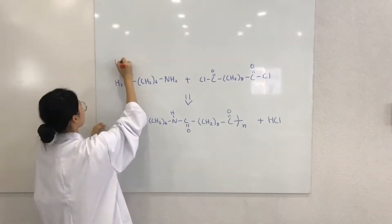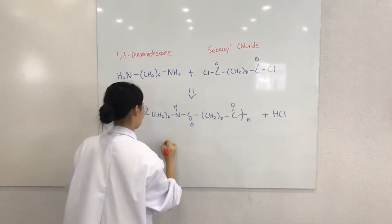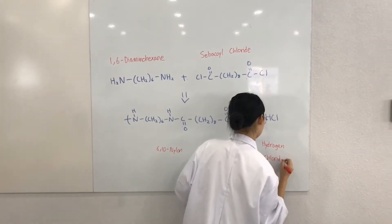Here, the 1,6-diaminohexane and sebacol chloride are the monomers. They react with each other to form larger structural units and release hydrogen chloride as the byproduct.